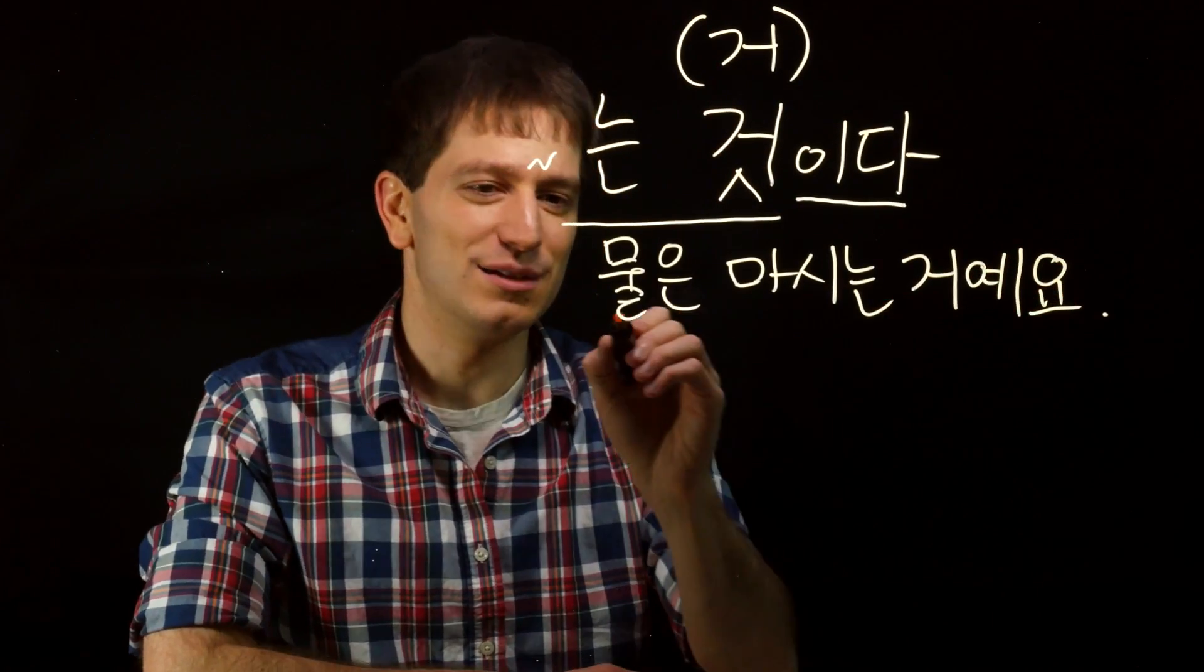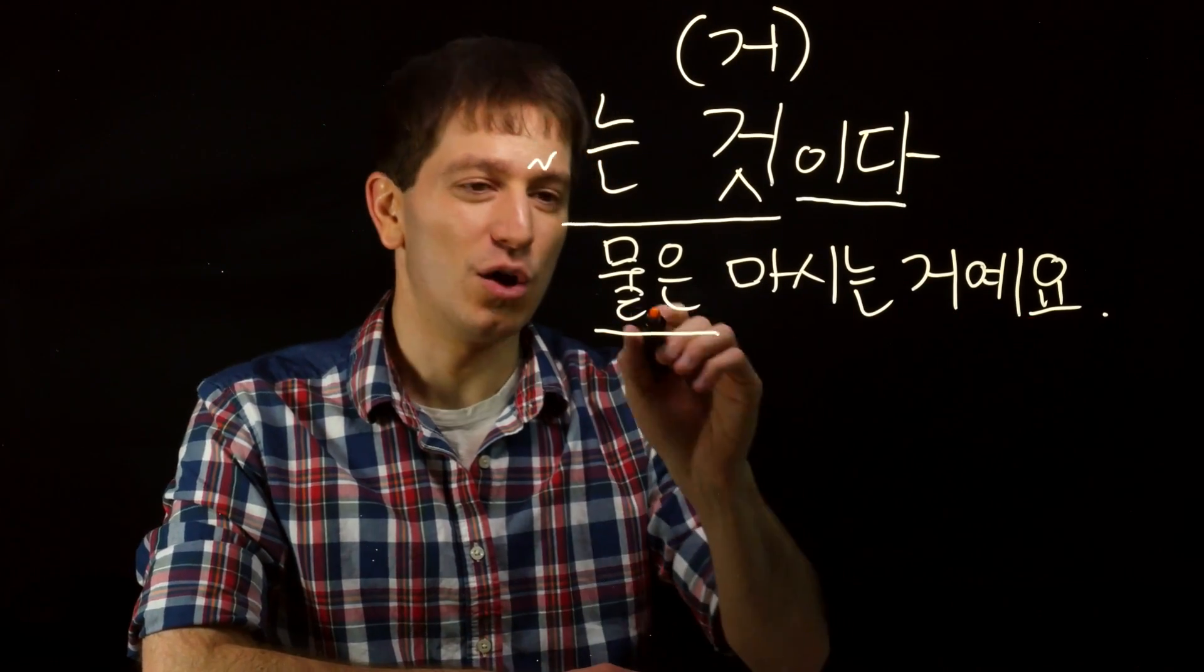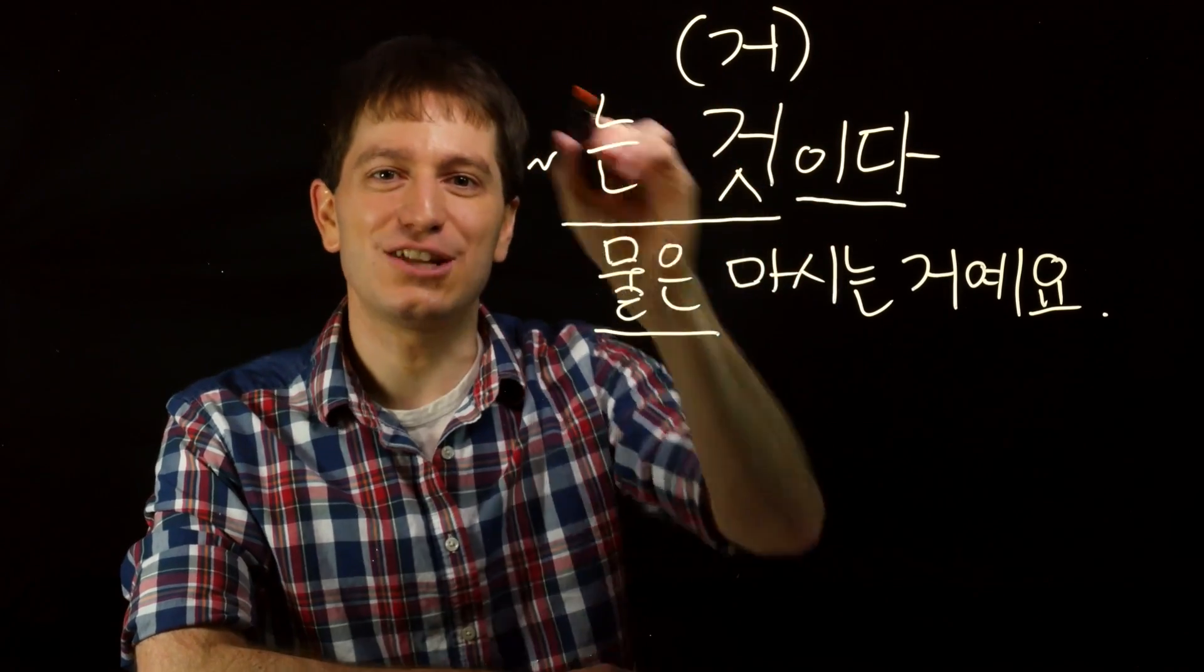For example, you could say something like, 물, water, 물은 마시는, drinking. 마시는 거예요. Water is a thing that you drink.